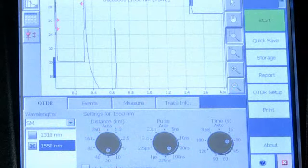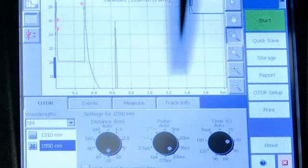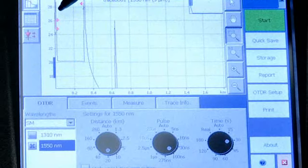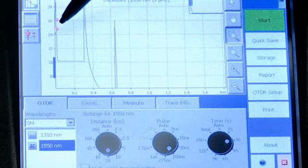A typical OTDR screen has a y-axis and an x-axis. The x-axis measures distance, and the y-axis measures attenuation and reflection in units of decibels.